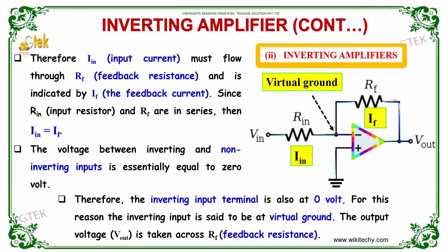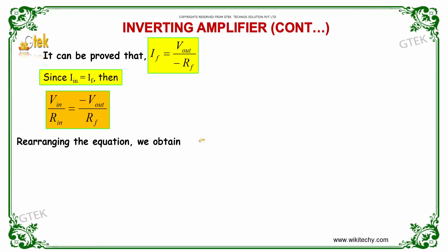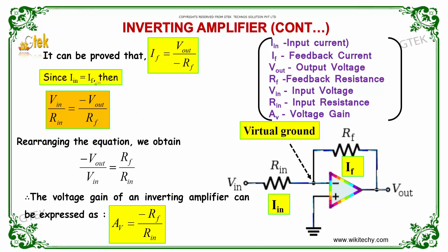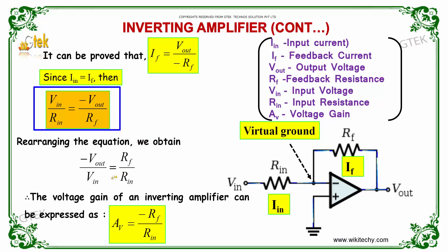This can be proved: I_F is equal to V_out divided by minus R_F, where V_out is the output voltage and R_F is the feedback resistance. Since I_in equals I_F, we can write V_in divided by R_N equals minus V_out divided by R_F. Rearranging gives minus V_out divided by V_in equals R_F divided by R_N.